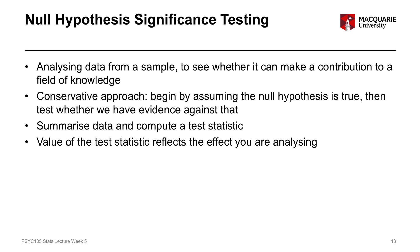If our test statistic is zero — if the actual number is zero — then there's literally no effect in our sample, which means there is very likely no effect in our population. The bigger the test statistic, meaning the further away from zero it is, the more likely there is some effect in our sample that's representing some effect in the population.